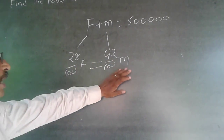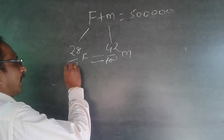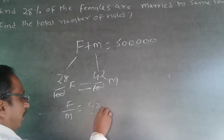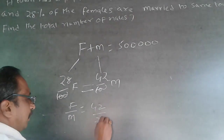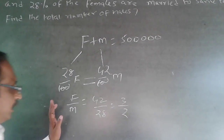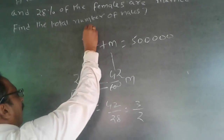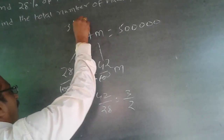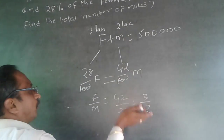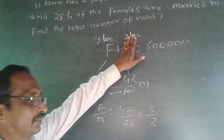This is where many people aren't able to get it. The 100 cancels out, so F divided by M will be equal to 42 by 28, which equals 3 by 2. So the ratio of females to males is 3 is to 2. Substituting here, females will be 3 lakhs and males will be 2 lakhs — that is 3/5 of 5 lakhs and 2/5 of 5 lakhs.